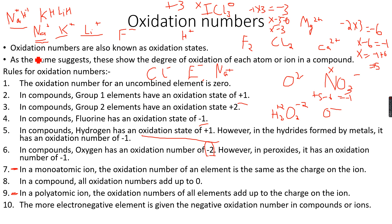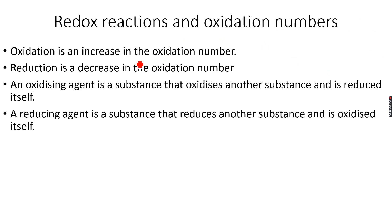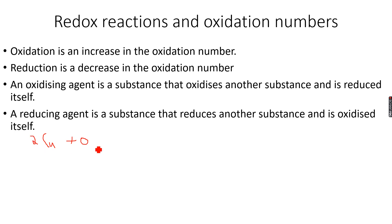Now, redox reactions and oxidation numbers. Oxidation is an increase in the oxidation number, and reduction is a decrease in the oxidation number. An oxidizing agent oxidizes another substance and is itself reduced. A reducing agent reduces another substance and is itself oxidized.